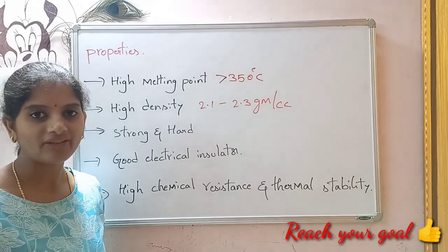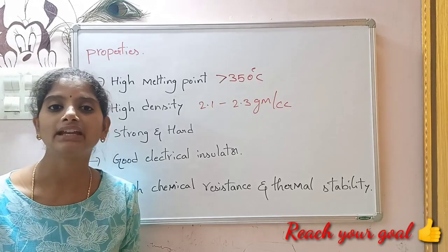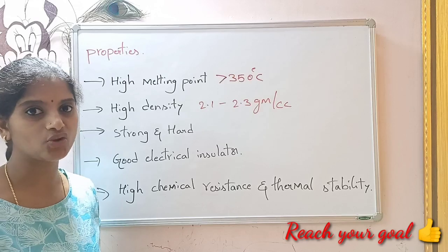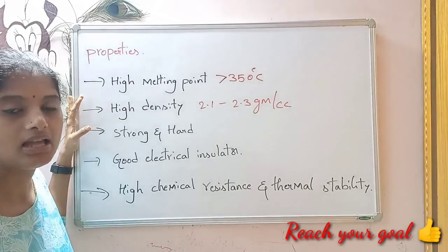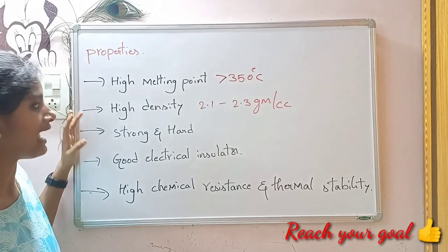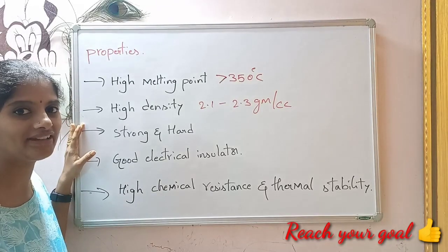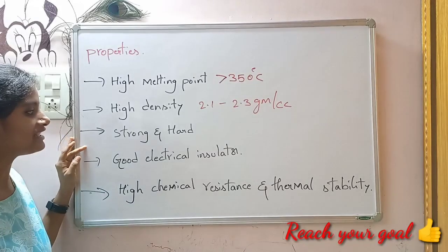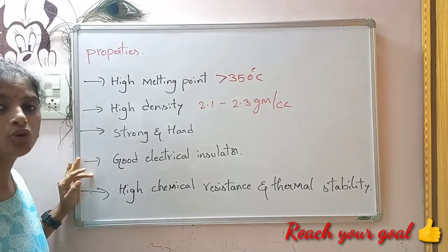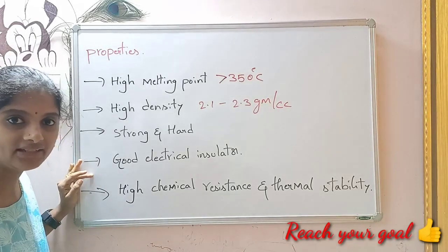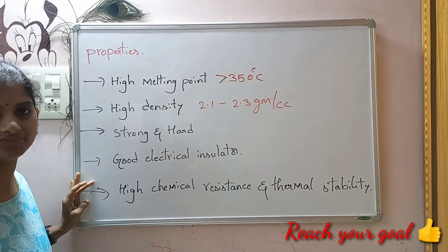Coming to properties of Teflon: Due to the presence of highly electronegative fluorine atoms, Teflon has a high melting point, that is greater than 350 degrees Celsius, and high density, that is 2.1 to 2.3 grams per cc. It is a very strong and tough polymer. It is a very good electrical insulator, and it has high chemical resistance and thermal stability.